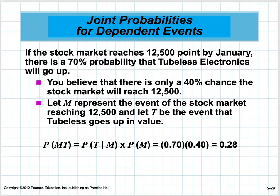If the stock market reaches 12,500 points by January, there's a 77% probability that Tubeless Electronics will go up. You believe there's only a 40% chance the market will reach that level. Let M represent the market reaching 12,500 and T represent Tubeless going up. The joint probability of both happening: P(T given M) × P(M) = 0.70 × 0.40 = 0.28, a 28% chance.